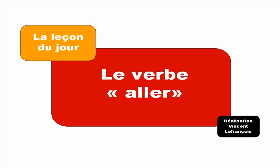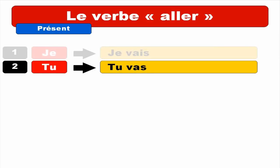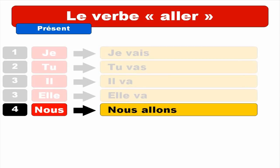JE VAIS. Repeat. JE VAIS. TU VAS. Repeat. TU VAS. IL VA. ELLE VA. Repeat. IL VA. ELLE VA. NOUS ALLONS — you can notice the liaison between S and A. NOUS ALLONS. Repeat. NOUS ALLONS.